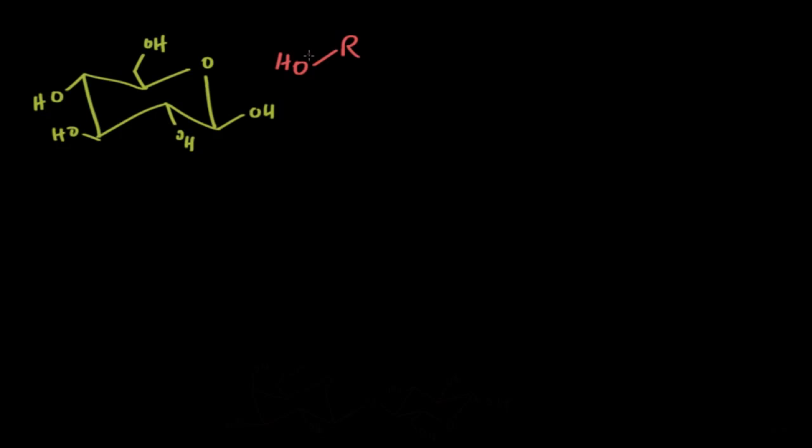In a previous video, I talked about how cyclic monosaccharides, like this green cyclic glucose, can react with alcohols, like this pink alcohol, to form acetals and ketals.